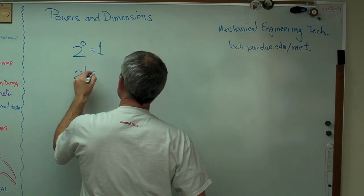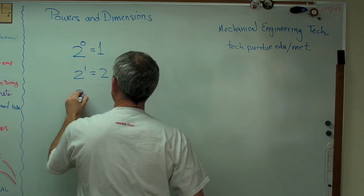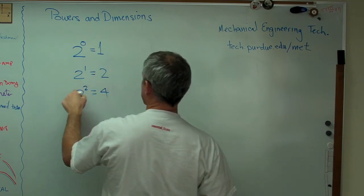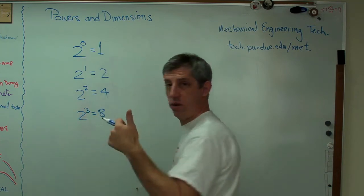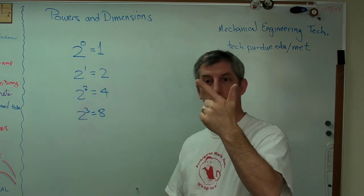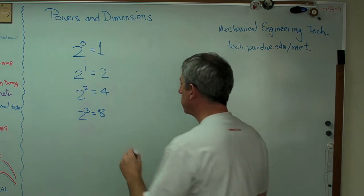So let's raise 2 to the first power. Well that's just 2. And 2 to the second power is 4 because it's 2 times 2. And 2 to the third power is 8 because it's 2 times 2 times 2 and so on.